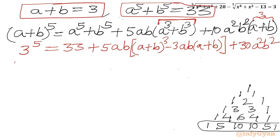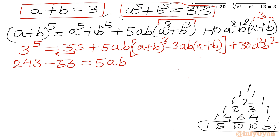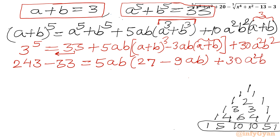Now 3⁵ is 243. If I take 33 to the LHS: 243 − 33 = 5ab times [(a + b)³ − 3ab(a + b)] + 30a²b². So 210 = 5ab times [27 − 3 times 3 times ab] + 30a²b², which gives 5ab(27 − 9ab) + 30a²b².